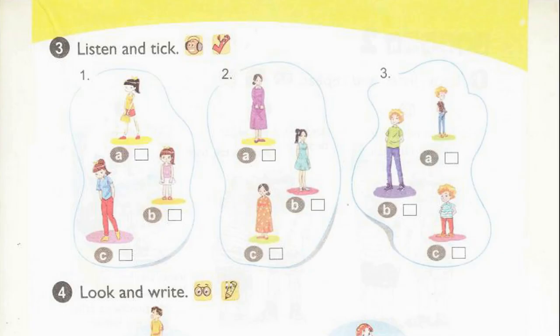Page 25, Activity 3. Listen and tick. 1. What does your sister look like? She's very tall. 2. What does your grandmother look like? She's old and short. 3. How old is your brother? He's 12. What does he look like? He's slim and short.